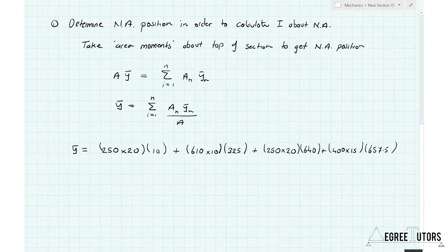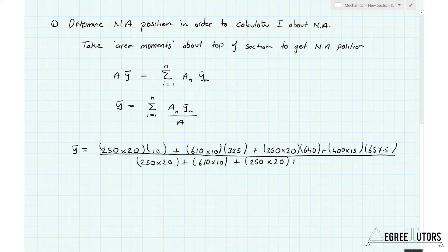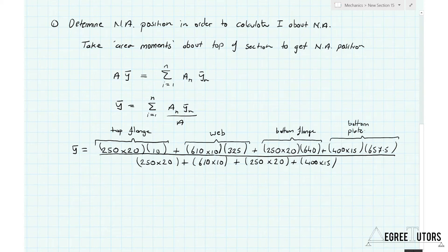That sum is then divided by the total area. Crunching the numbers gives y-bar = 415mm. This tells us that the neutral axis for this compound area is 415mm from the top edge of the section.